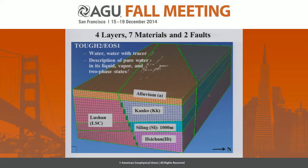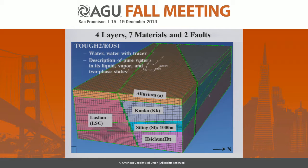In this model, we have the Lushan Formation in the south of the area. We have all these layers and two faults.